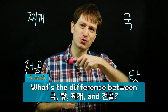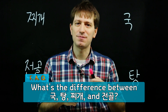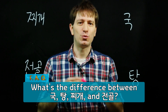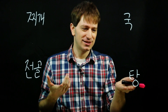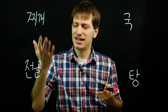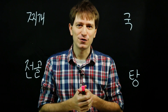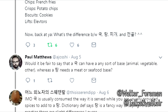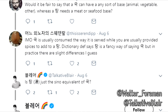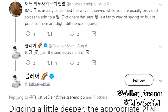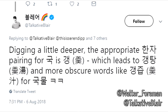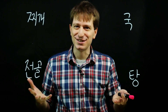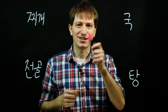So, you've just stuck your spoon into something that looks like soup, and you're not sure what to call it — 국, 탕, 찌개, or 전골. Thank you to Walter Foreman and Talkative Blair on Twitter for today's question. I lost a lot of sleep trying to come up with the actual difference between these four. So let's get started.